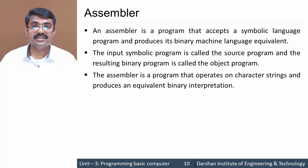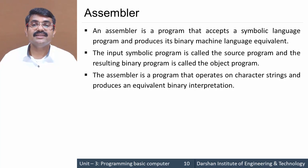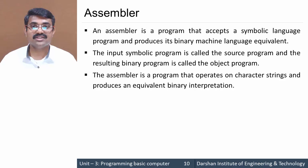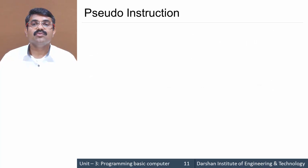The assembler program operates on character strings and produces the corresponding binary coded decimal equivalent representation. The assembler's basic and main task is to perform the translation operation from symbolic notations to binary form.